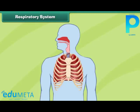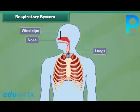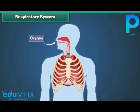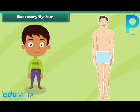The human respiratory system is made up of the nose, windpipe, and lungs. It helps in taking oxygen from the air and removing carbon dioxide from the human body. The oxygen mixes with food to give us energy.